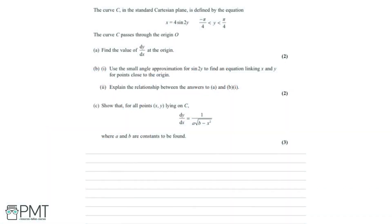The curve C in the standard Cartesian plane is defined by the equation x equals 4 sine 2y. The curve C passes through the origin. Part A says we need to find the value of dy by dx at the origin, and this is for two marks. So I'm just going to write out our equation: x equals 4 sine 2y.